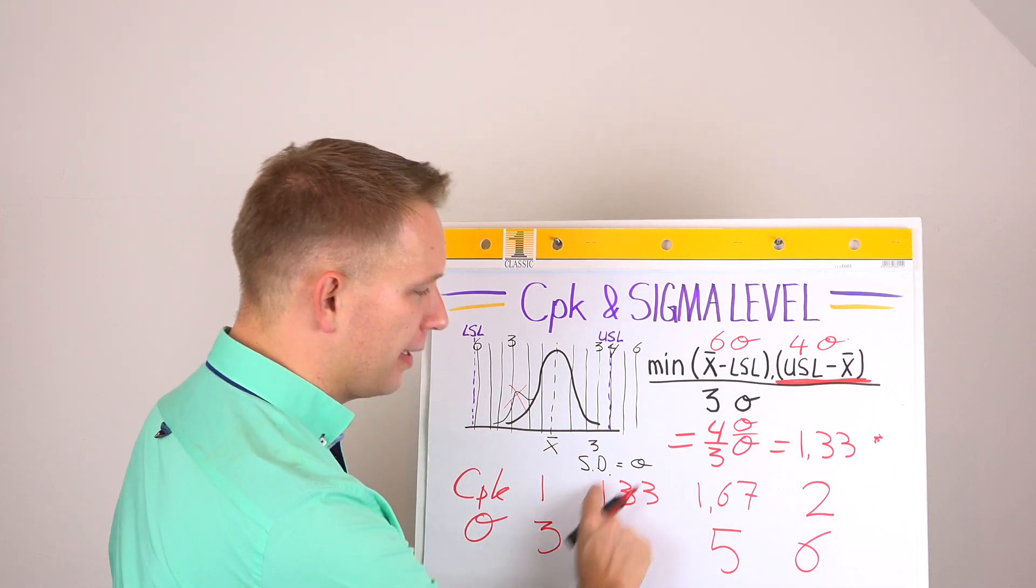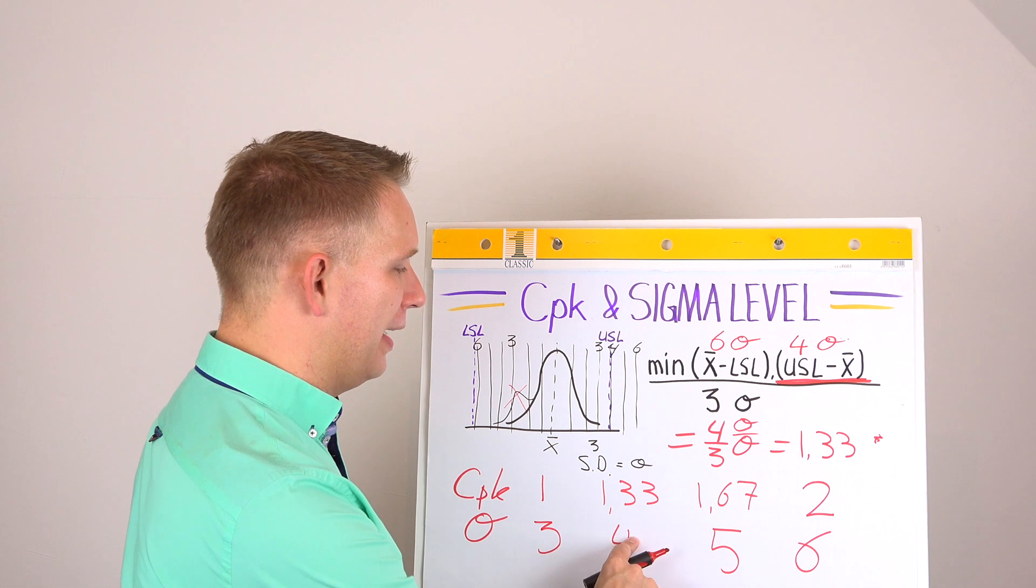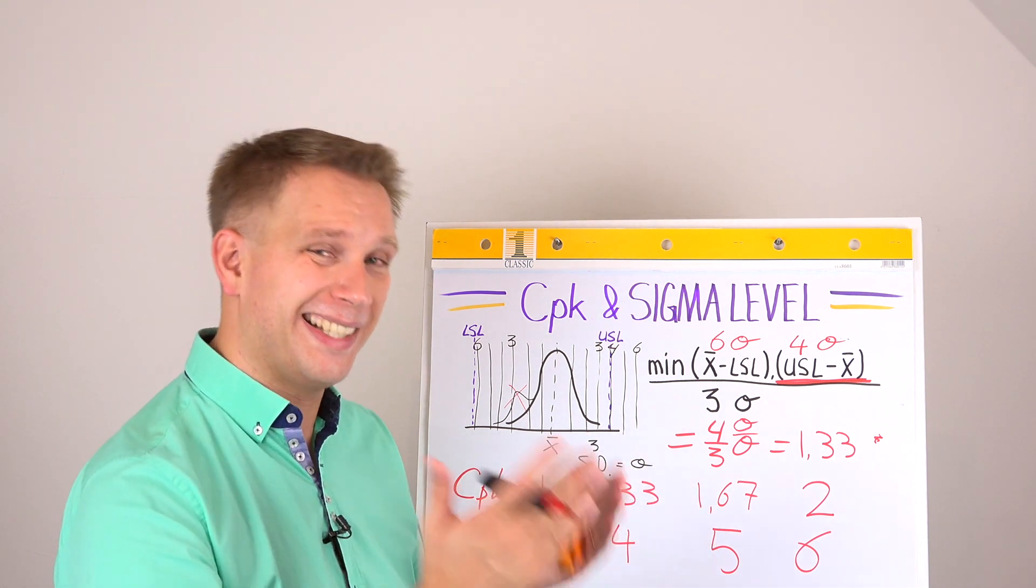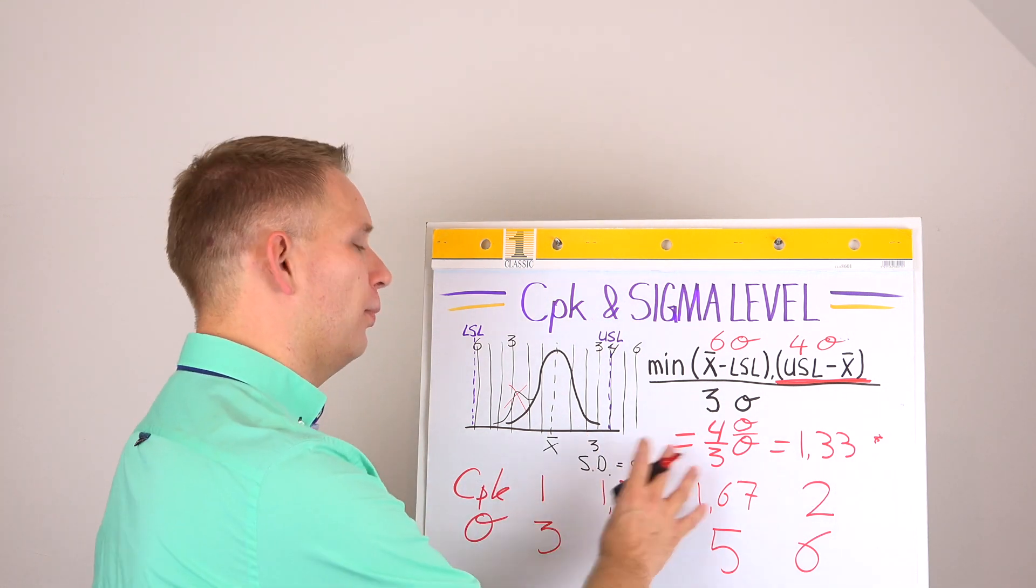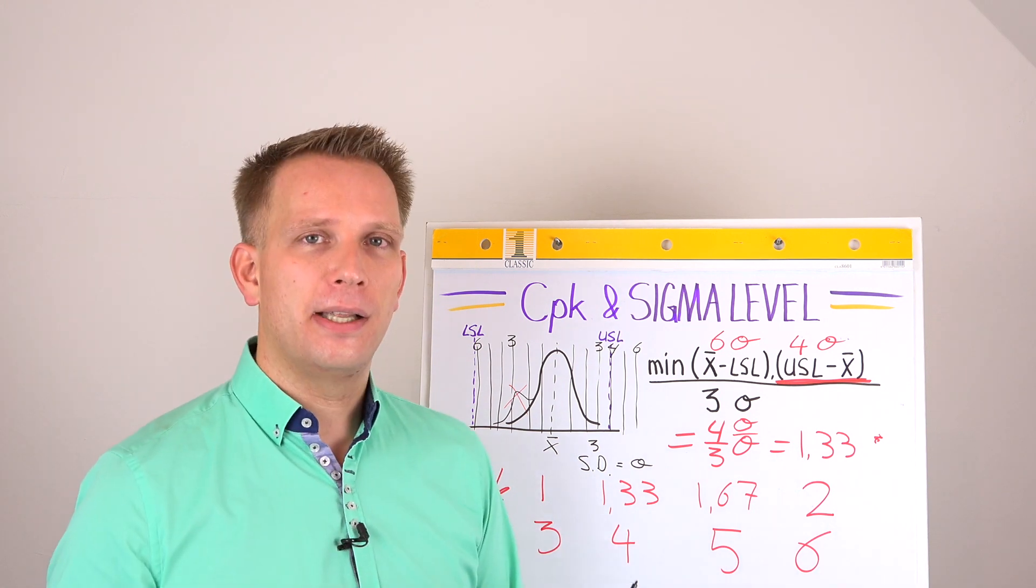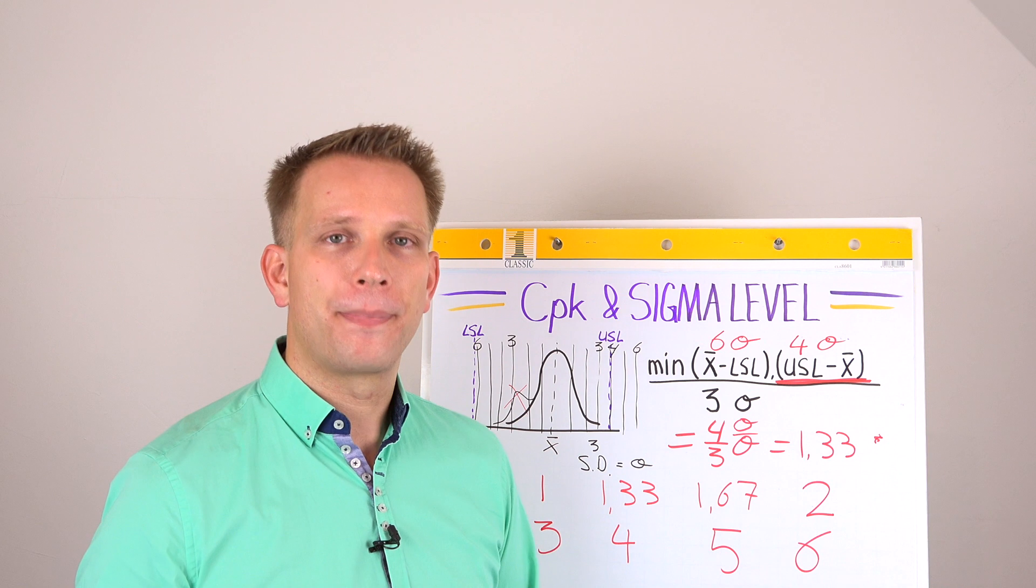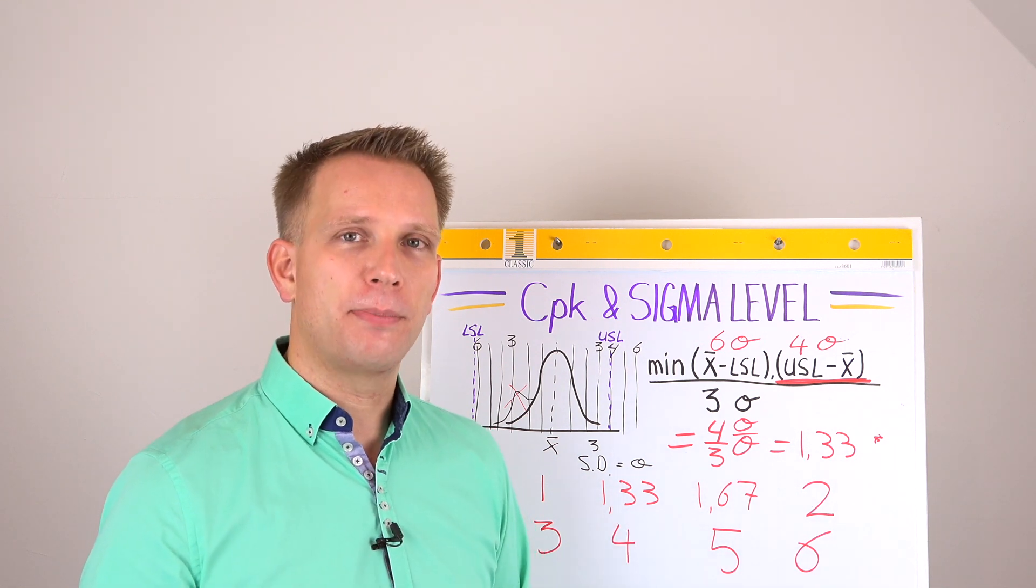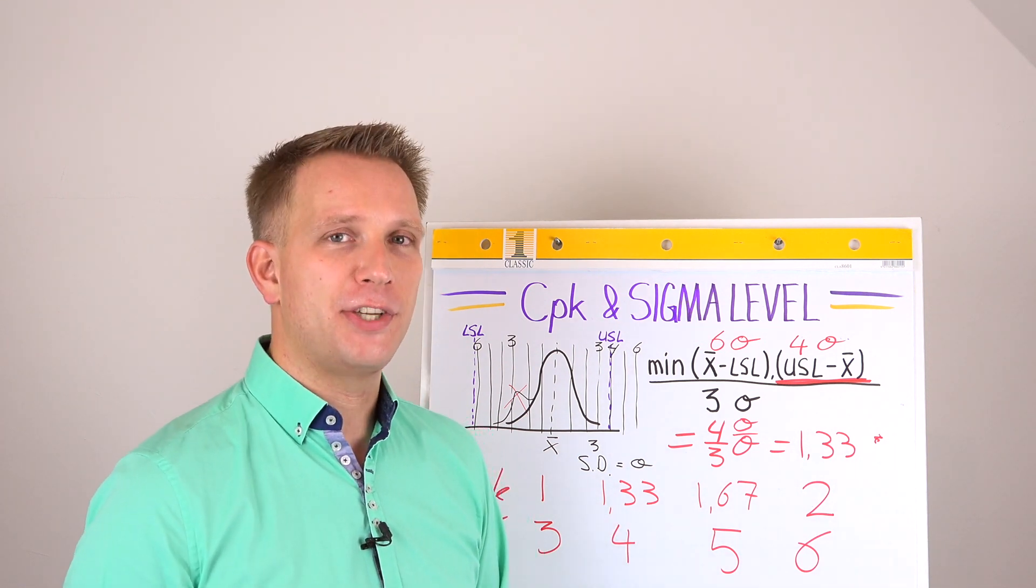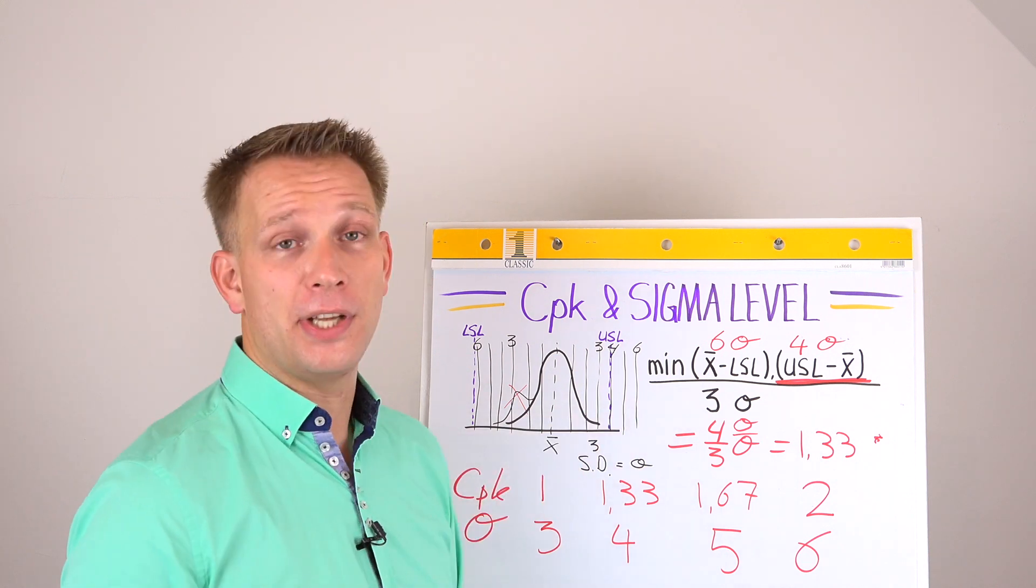And that's why companies like to be somewhere around here. So a CPK of 1.5 would be exactly that level at 1.33, 1.67. These are levels where you can more or less guarantee that you will always be delivering products within specifications. And that is why companies ask for it.